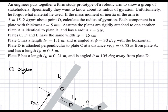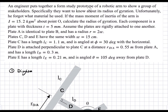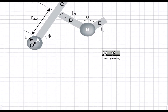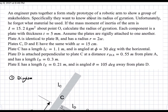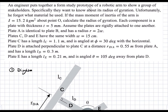We're given the mass moment of inertia and we're asked to find the radius of gyration. Since we are given the moment of inertia, we can write out the formula: the radius of gyration k is equal to the square root of the mass moment of inertia divided by the mass. We have I and we're asked to find k, so all we need to determine is the mass. We're not given a density or a mass, so we're going to have to solve for that.